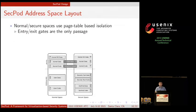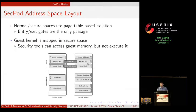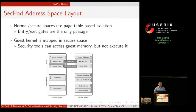This figure shows the SecPod address layout. The normal and secure spaces use page table-based isolation. Therefore, the kernel cannot directly access the secure space except through the entry and exit gates. In the secure space, we also map the kernel into the secure space and set the kernel code as read-only. So the security tools in the secure space can access the guest memory but not execute it.